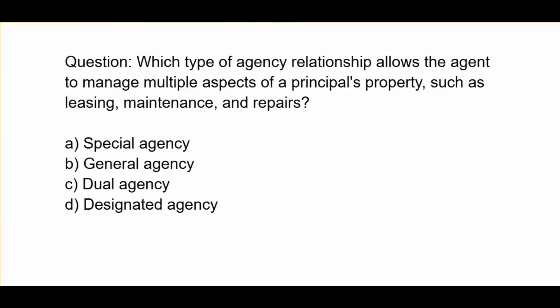Which type of agency relationship allows the agent to manage multiple aspects of a principal's property, such as leasing, maintenance, and repairs? A. Special agency. B. General agency. C. Dual agency. D. Designated agency.